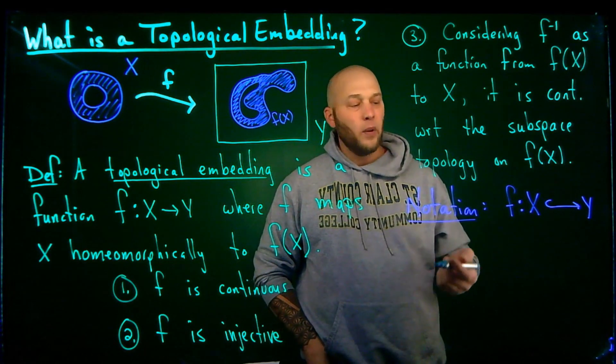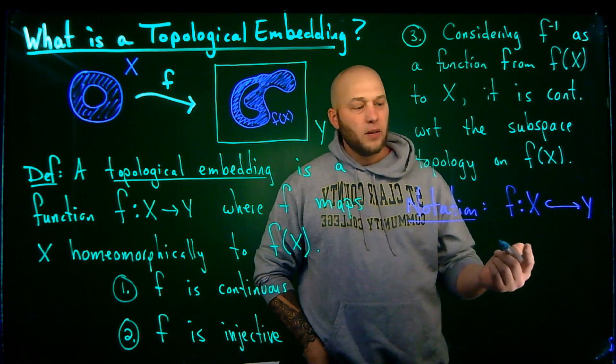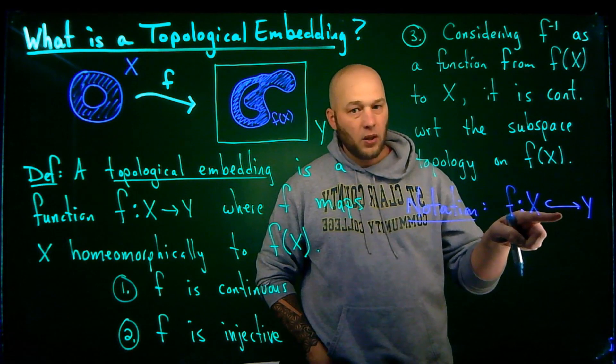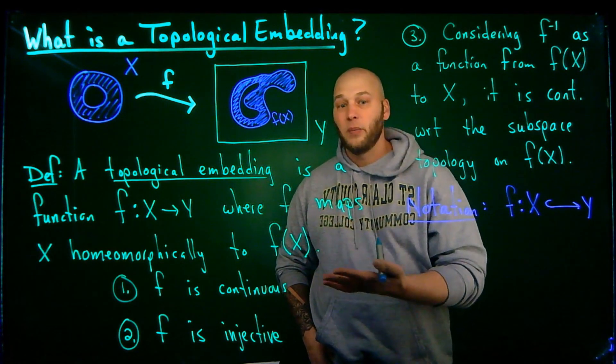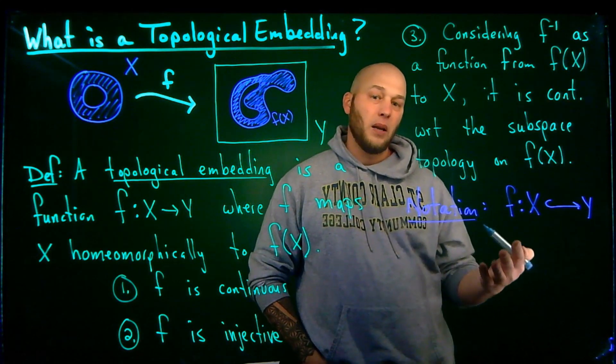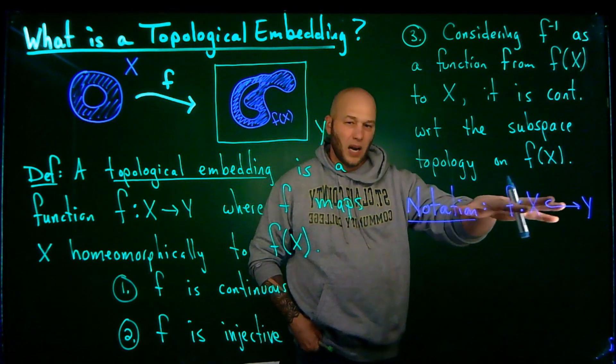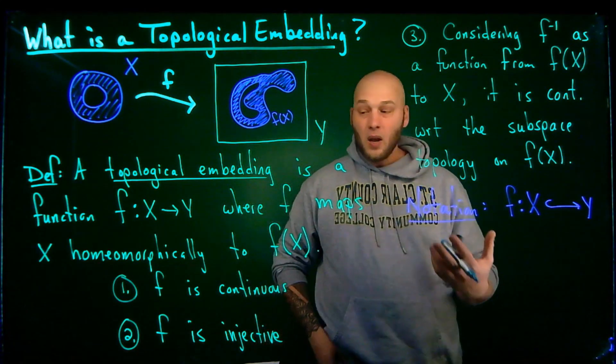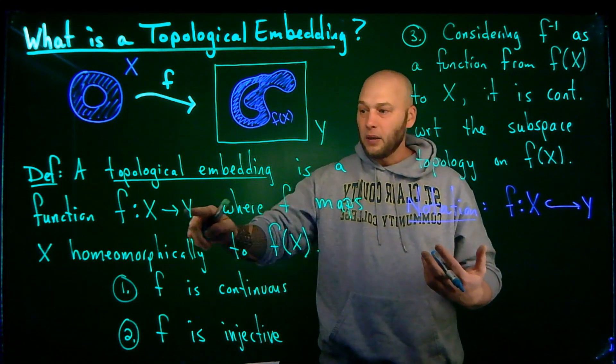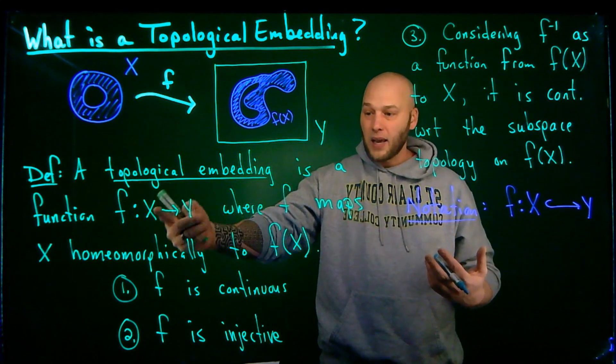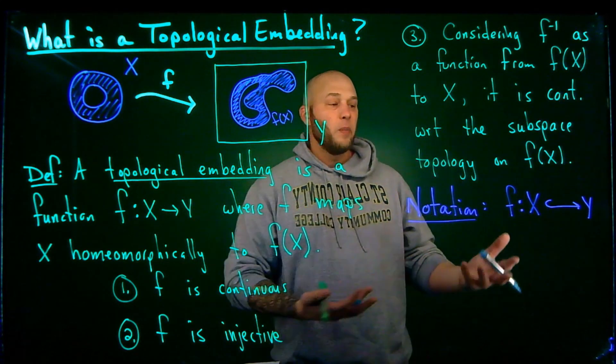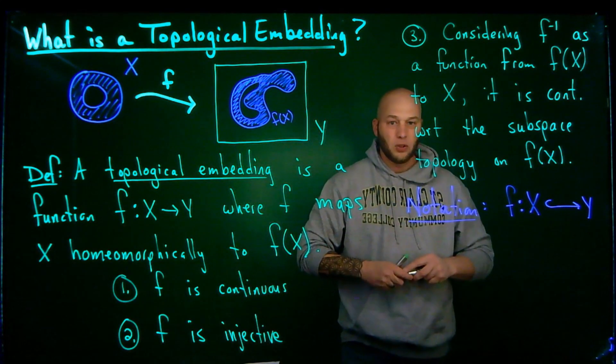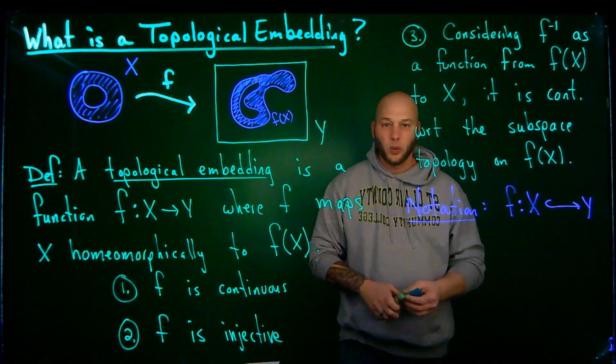The problem with this notation, however, is that this is the exact same notation where we use for an injection. Now an embedding is an injection, but an injection might not necessarily be an embedding, and therefore this is probably not the best notation. Personally, I would probably either write it this way, but then say it is an embedding, you know, kind of use the words rather than just the symbol, because the symbol could be misinterpreted if somebody else were to read that.